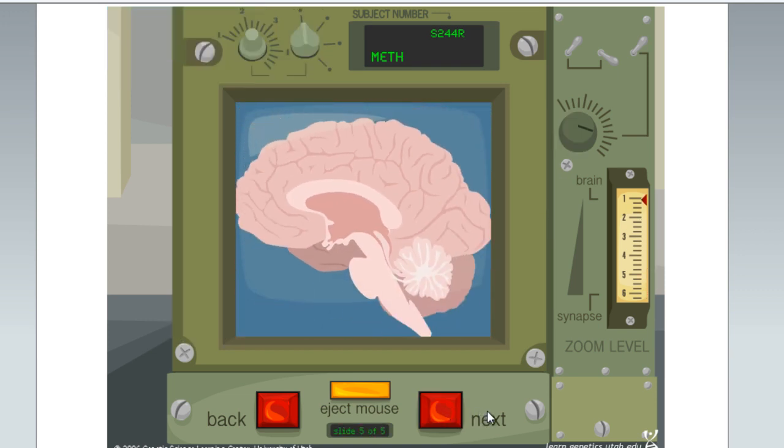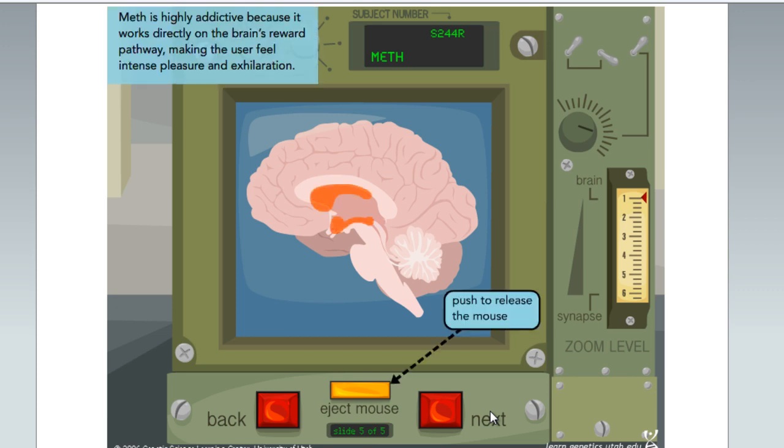Meth is highly addictive because it works directly on the brain's reward pathway, making the user feel intense pleasure and exhilaration.